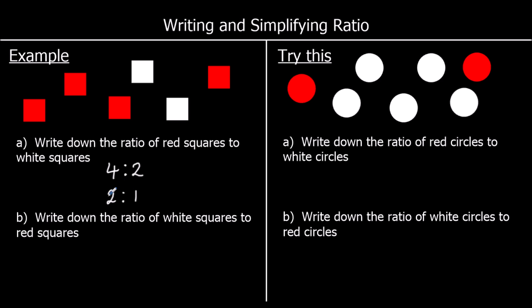For every two red squares, there's one white square. Part B says write down the ratio of white squares to red squares. So it's the same thing, just the other way around. So we're going to have white squares first, and then red squares. So the ratio of red squares to white squares was two to one, so the ratio of white squares to red squares is one to two. There's one white square for every two red squares.